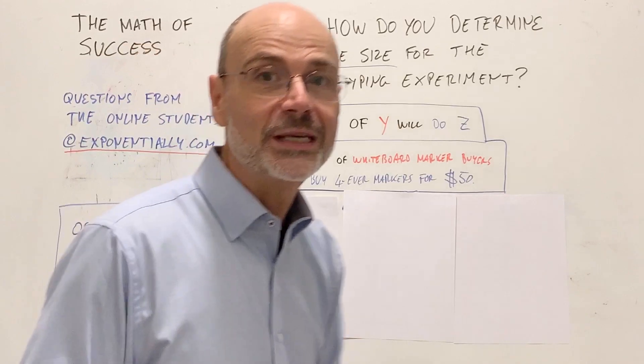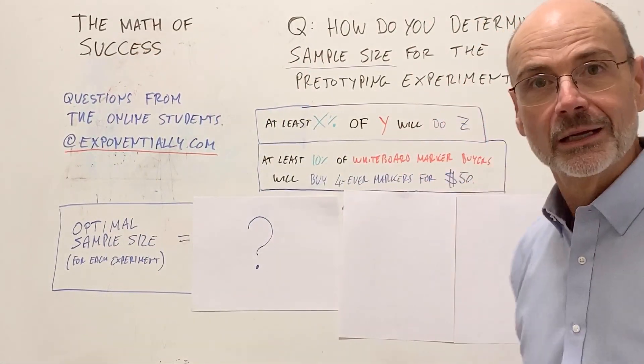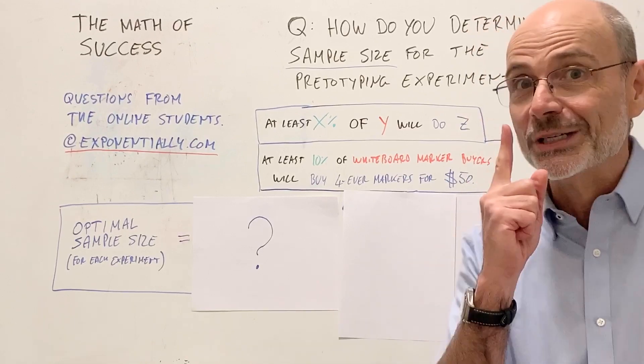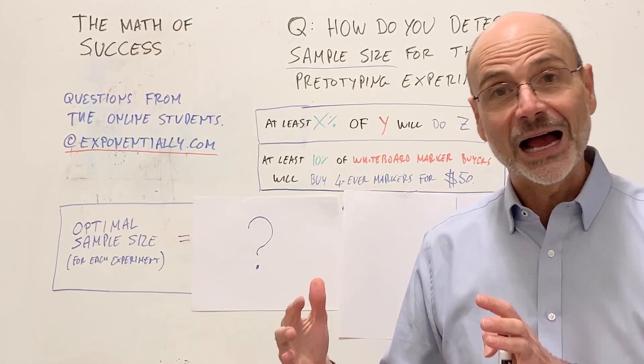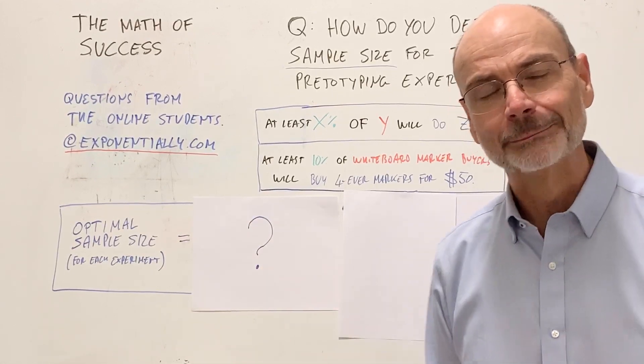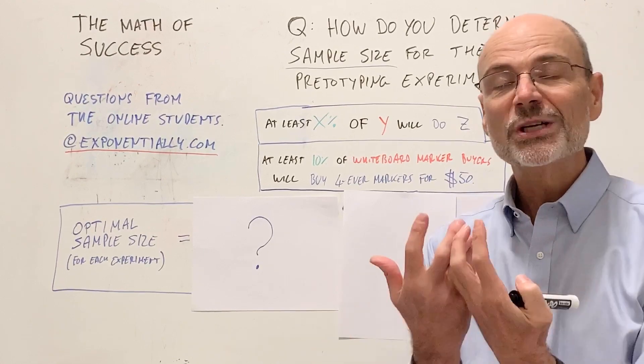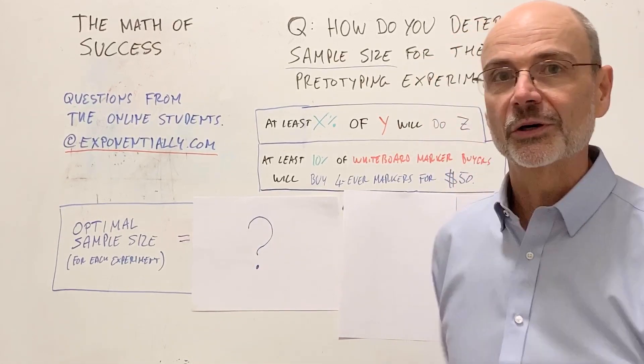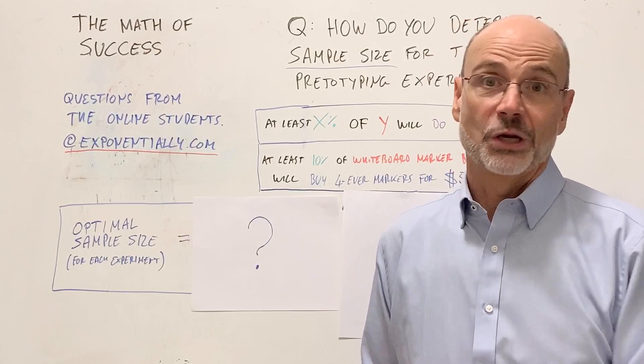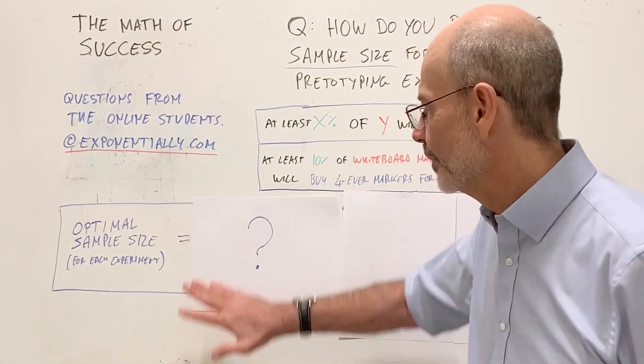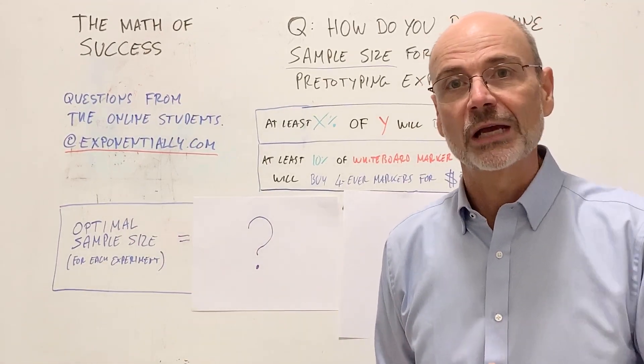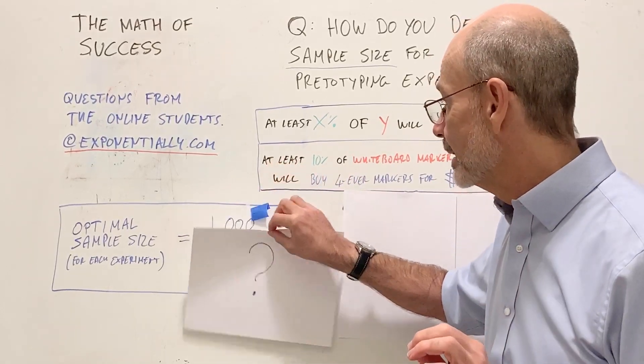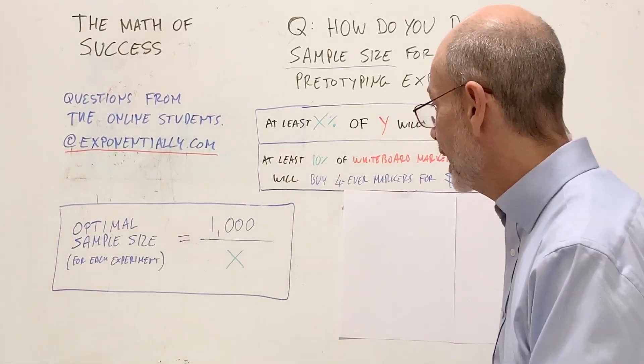Okay, so once you have the XYZ hypothesis out, well written, then you can determine what is the optimal sample size for each pretotyping experiment. And remember, you don't do just one experiment. You need to run two, three, four, five. I explained in previous videos how many experiments you need to run. But for each experiment, there is an optimal sample size. You cannot wait for 1,000 people that try to buy markers at a store. 10 is too little, maybe it's too little, depending on what you will see. So how do you determine the optimal sample size for each experiment? Well, there is a very simple formula. It's a rule of thumb, a heuristic that will do you right. So here's the formula.